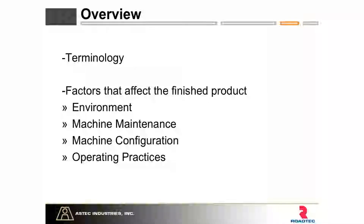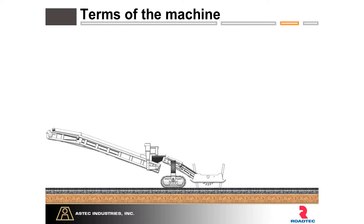As an overview of topics, we're going to cover a list of different things that affect our finished product — the finished milled surface. We'll cover some topics we don't consider as much as we should, some obvious and some we fail to consider as we move from job to job. We'll start with environment and machine maintenance, machine configuration, operating practices, and end with drum configuration. But first, let's go with terminology, because every manufacturer lists these components by a different name. I'm going to define them for the purpose of this presentation.